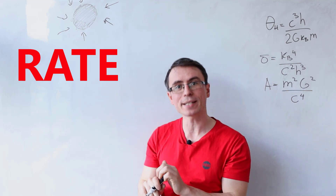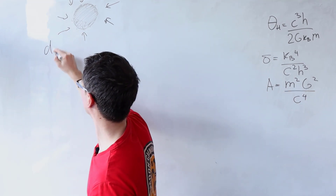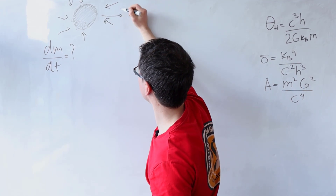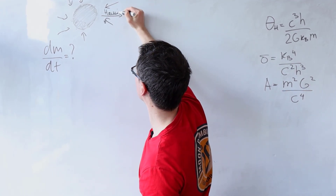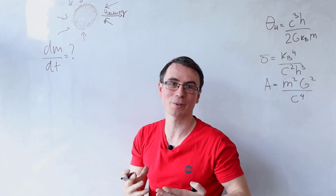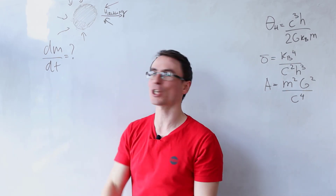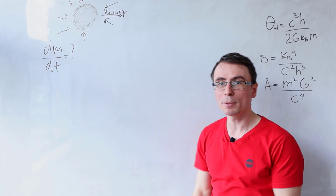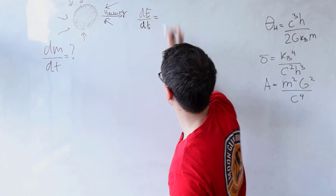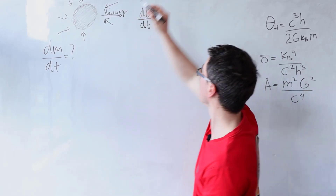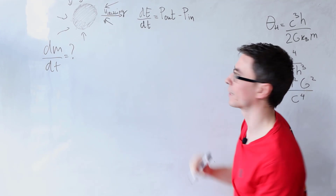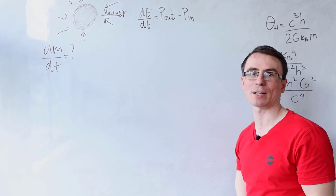We need to find the rate of change of the black hole's mass. The black hole will be emitting some radiation due to Hawking temperature, but it will also be receiving some of the cosmic microwave background. I'm going to start by considering the rate of change of energy dE/dt, given by the difference in power P_out due to Hawking radiation, take away the power P_in due to the cosmic microwave background radiation.